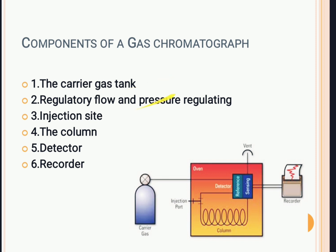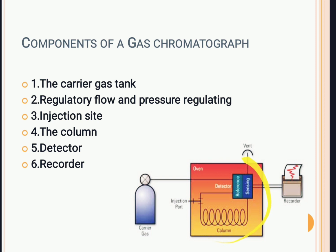Carrier gas tank, regulatory flow and pressure regulating, injection site, column, detector, and recorder — all these six parts are important in the gas chromatograph. Both the column and the detector are kept inside an oven. The temperature of the oven should be maintained so that the injected sample gets easily separated according to boiling points and we get peaks on the software.